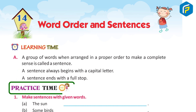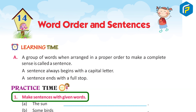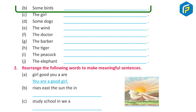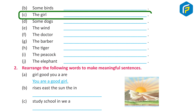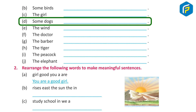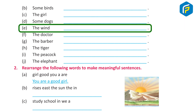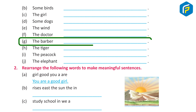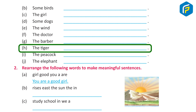Practice time one: Make sentences with the given words. A) The sun was shining. B) Some birds are sitting on the branch of that tree. C) The girl standing over there is Mary. D) I take a walk with my dog in the evening. E) The leaves rustle in the wind. F) The doctor advised me to take complete rest.